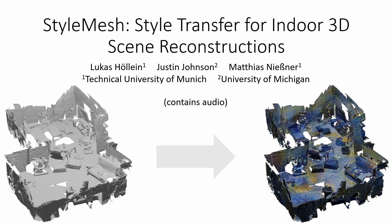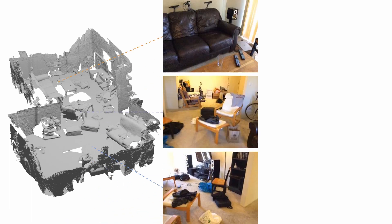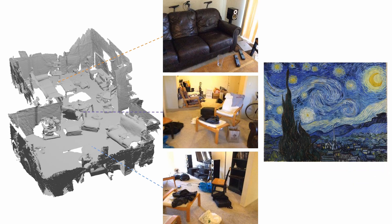We present StyleMesh, style transfer for indoor 3D scene reconstructions. Given a mesh of an indoor scene reconstruction and the input RGB images, we want to optimize for a texture for the scene that combines the color information with those of an artistic painting. This allows us to texture the scene in an artistic style and explore it, for example, in a VR environment.